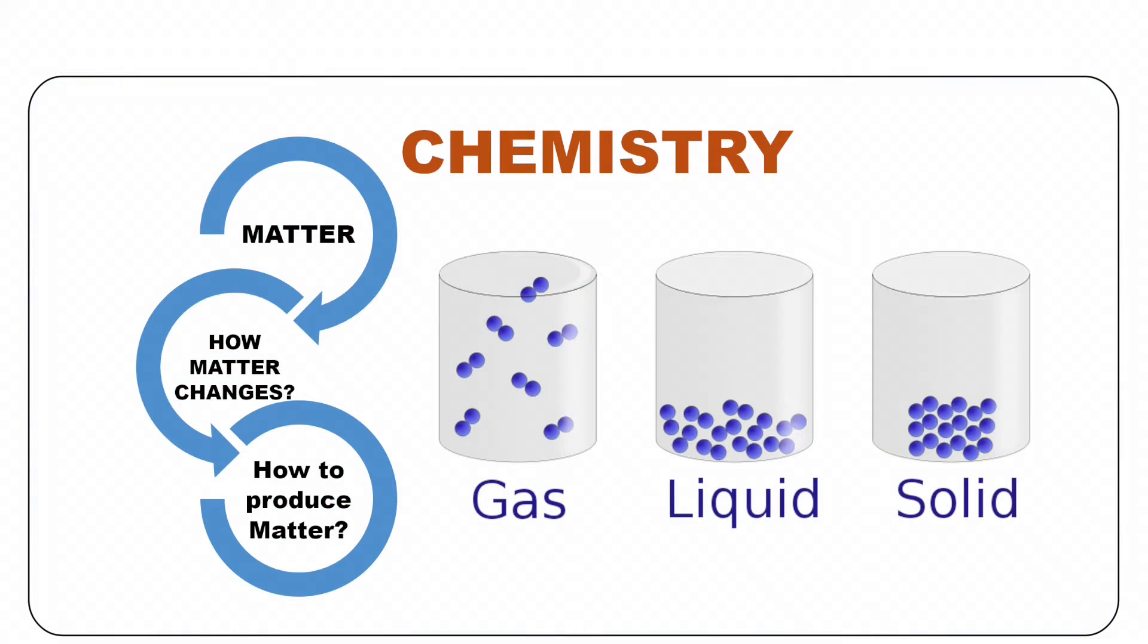In simplest terms, chemistry is the study of matter and the changes that take place with the matter. Chemists are people who not only study matter but also produce new matter by making or producing new substances and transform it into amazing things.